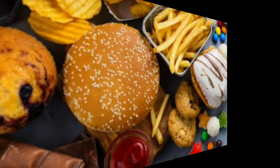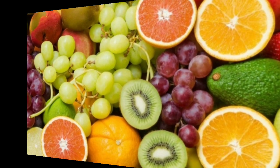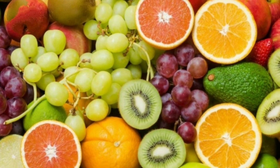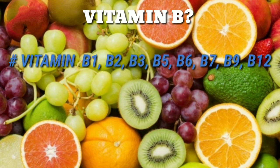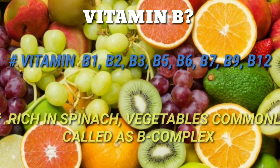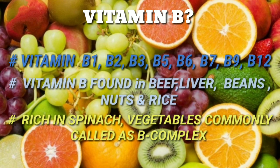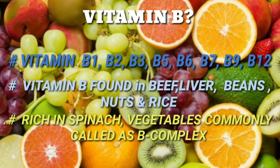Vitamin A found in vegetables is also known as beta carotene. Vitamin B is considered as B1, B2, B3, B5, B6, B7, B9, and B12.